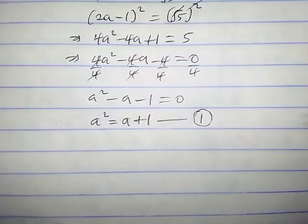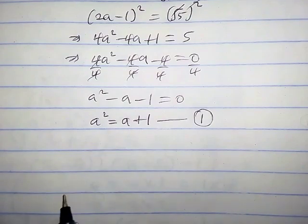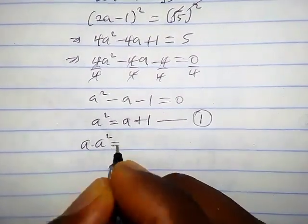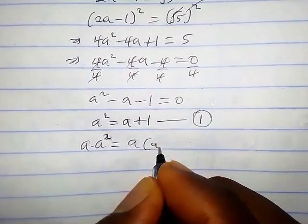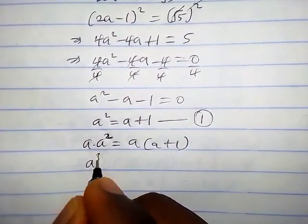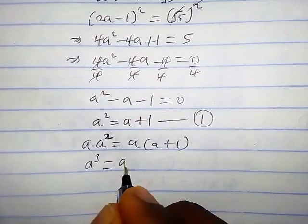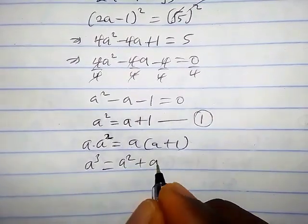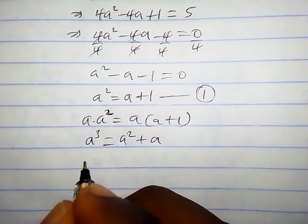Now we multiply both sides of the equation by a. We get a times a squared equals a times a plus one. So a cubed equals a squared plus a. Now let's square both sides of this equation.